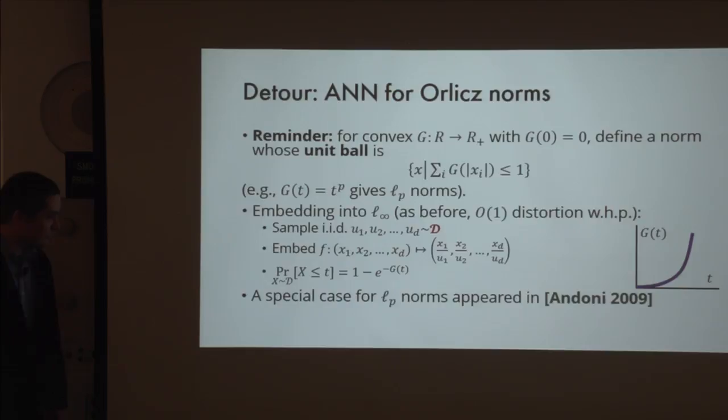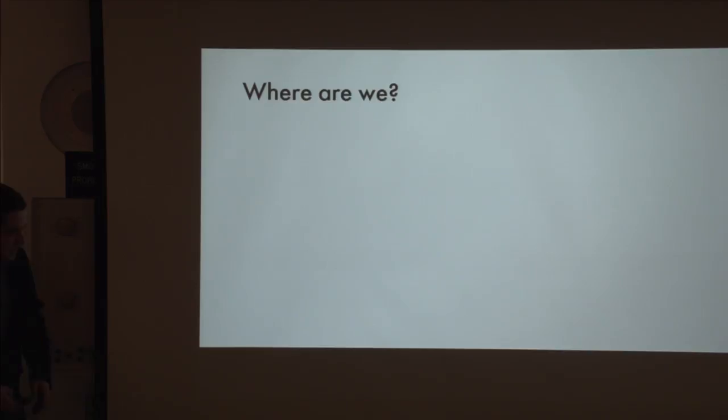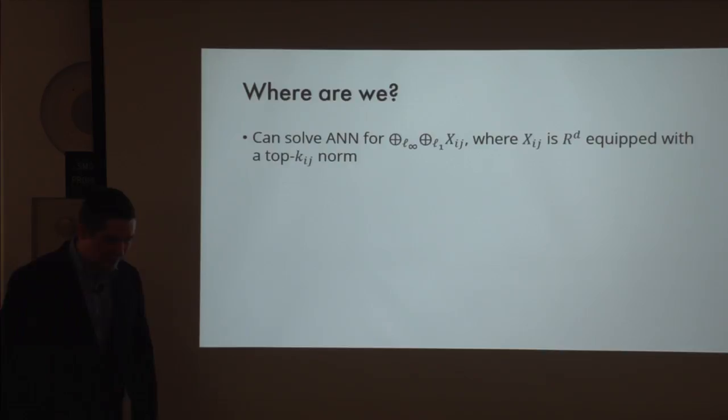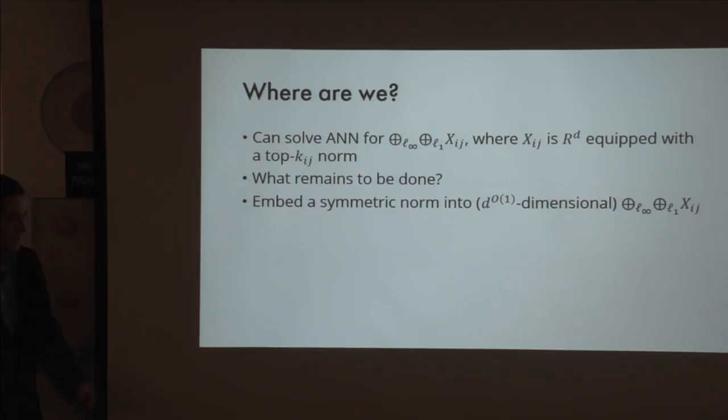Let me summarize our discussion so far. To solve ANN for our host space: first, we use the known tool to handle direct sums. For X_{ij}, we embed into L-infinity and do approximate nearest neighbor search there. However, the most interesting part remains: how to embed the symmetric norm into low-dimensional L-infinity sums of L_1 sums of X_{ij}—something I'll explain now.